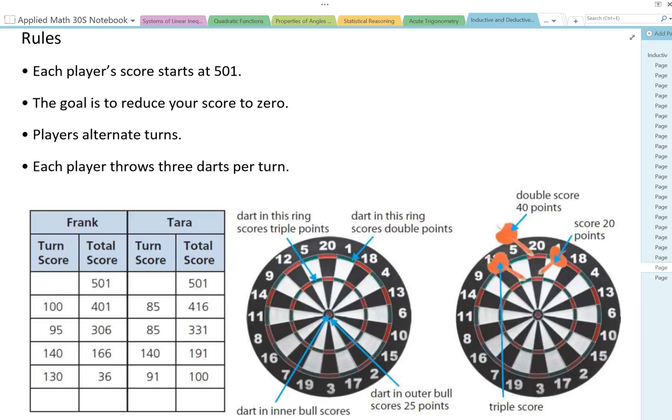Players alternate turns. So first it's Frank's turn then Tara and so on. Each player throws three darts per turn.